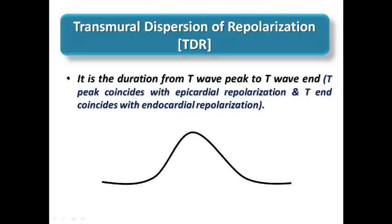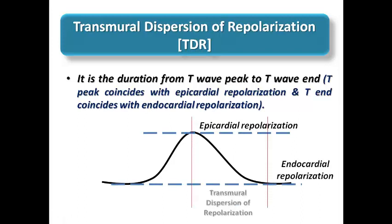Moving to another important topic: when we see a T-wave in the ECG, there is an important terminology especially for electrophysiology — the duration from the T-wave peak to the T-wave end. The peak of the T-wave represents epicardial repolarization, and the base of the T-wave near its end represents endocardial repolarization. Measuring the duration from the peak to the end of the T-wave gives us a clinically significant interval.